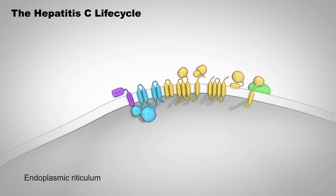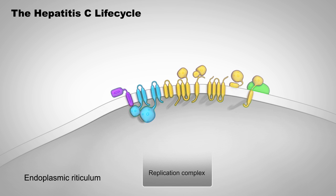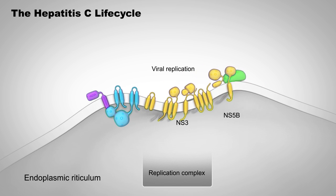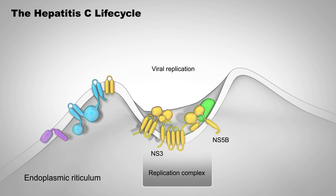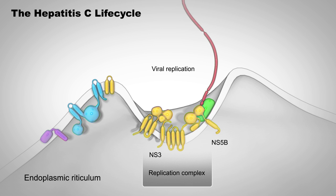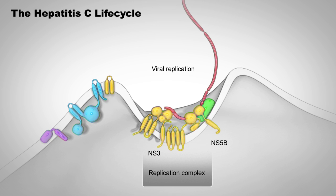The non-structural proteins NS3 and NS5b facilitate HCV RNA replication, first by assembling the membrane-associated replication complex responsible for synthesizing RNA, and then by recruiting the genomic RNA into the complex. The NS5b protein encodes the RNA-dependent RNA polymerase responsible for RNA synthesis.